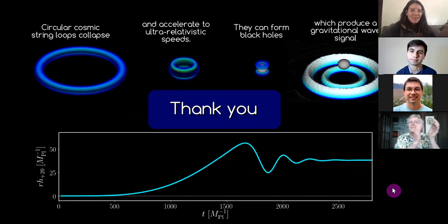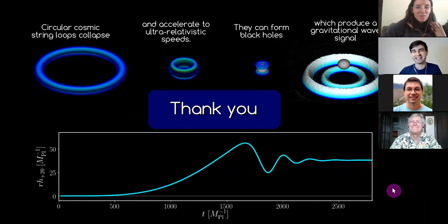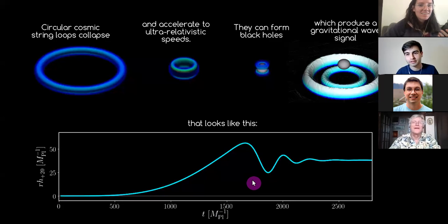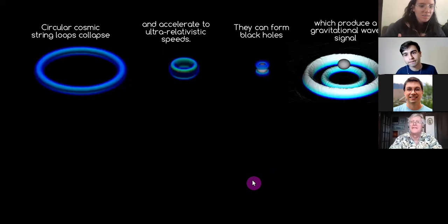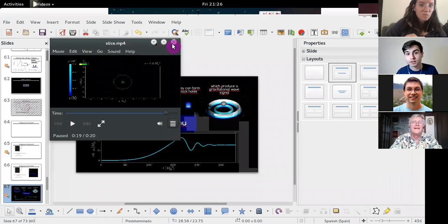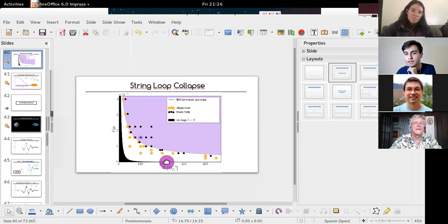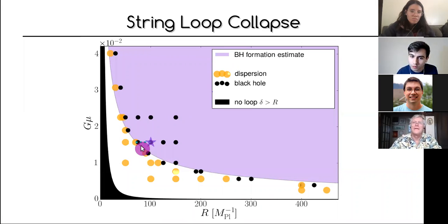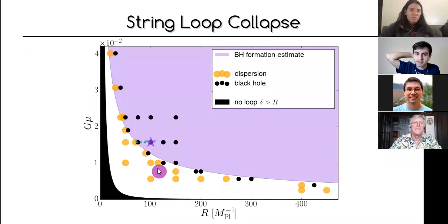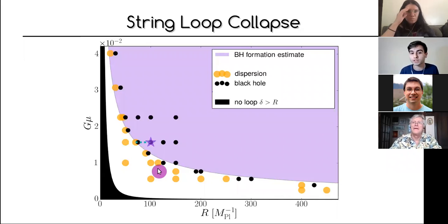Thanks, that was really cool. There is one question in the chat: Andrew asks, is there any known case where the hoop conjecture is violated? In our simulations we haven't seen it violated, though near the boundary it requires a lot of resolution to resolve. In general, as far as I know, in numerical relativity the hoop conjecture always works really well — I don't know any case where it has not been useful.